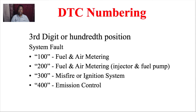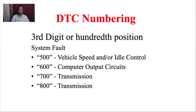P0301 is a misfire on cylinder 1. The 500, 600, 700, and 800 series represent other systems that could set a fault and turn the light on — and yes, a transmission code can turn on the MIL light.